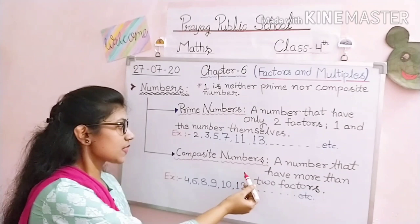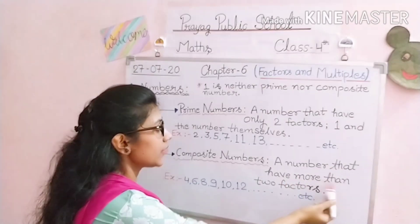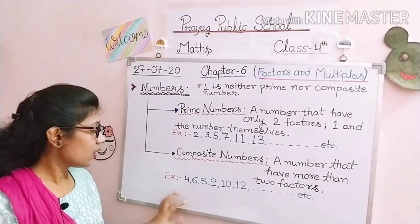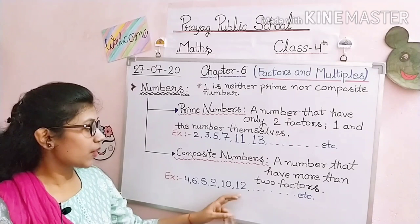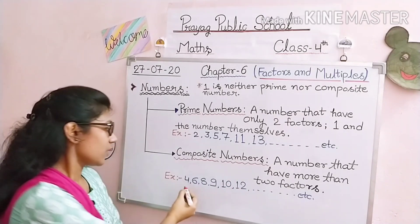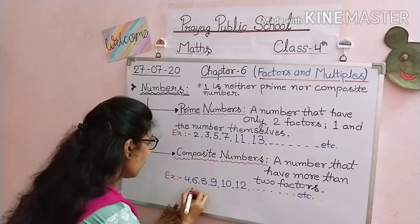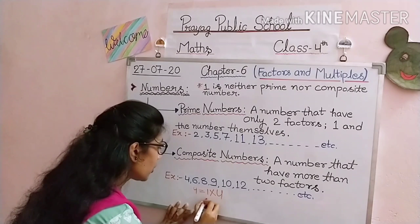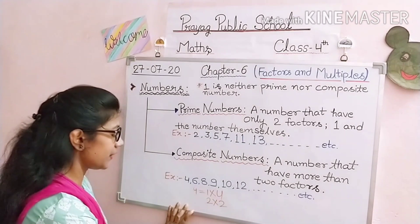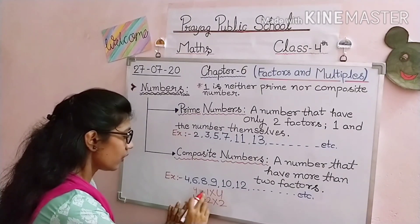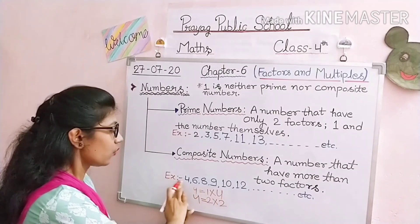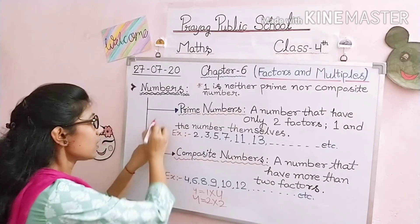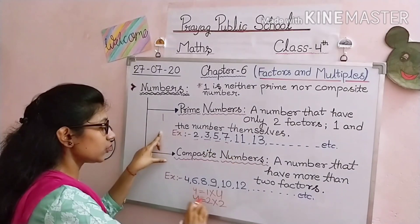Composite numbers are numbers that have more than two factors. Examples are 4, 6, 8, 9, 10, 12, etc. For example, take 4: we can get 4 as 1×4, 4×1, and also 2×2. So 4 has three factors: 1, 2, and 4 — more than two factors. That is why 4 is a composite number. Prime numbers have only two factors — 1 and the number itself — while composite numbers have more than two factors.